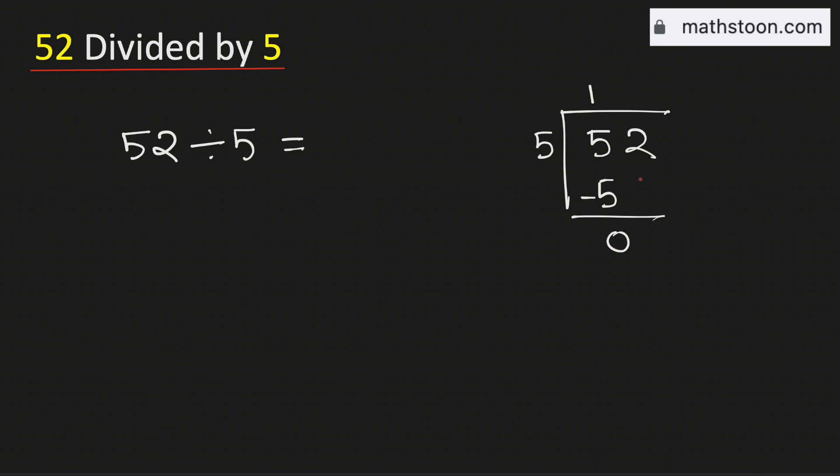As 5 cannot go into 0, we need to bring down this number 2 here. As there is no meaning of zeros on the left, we will remove it.